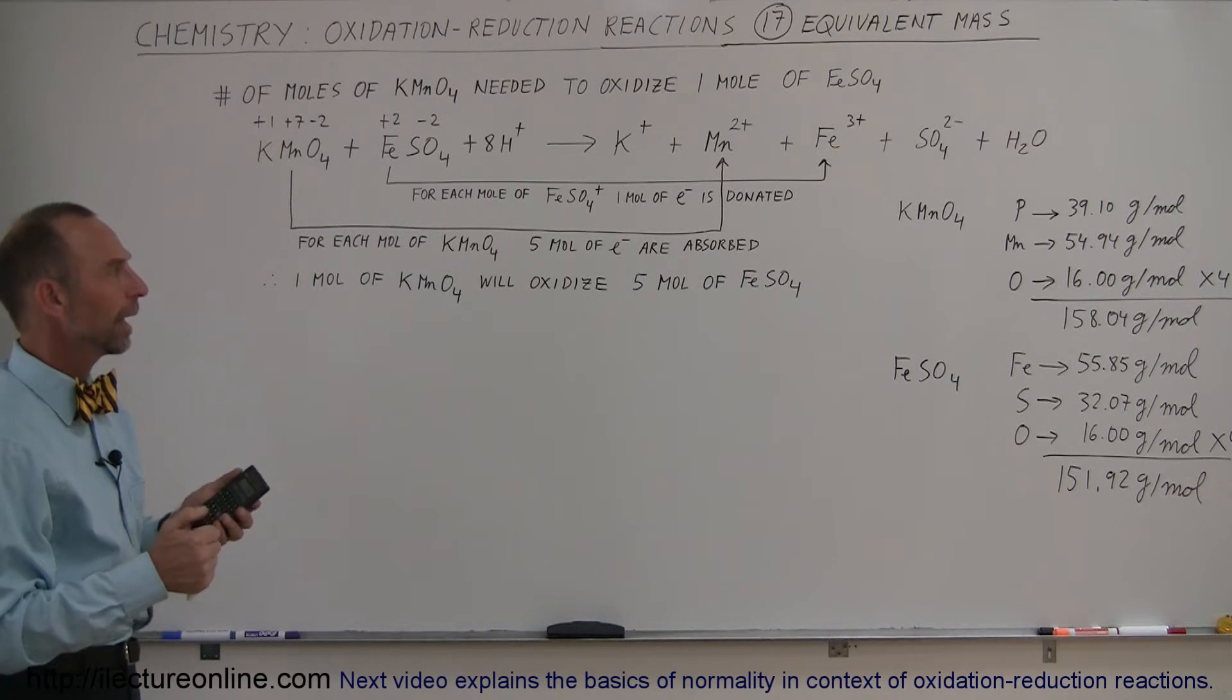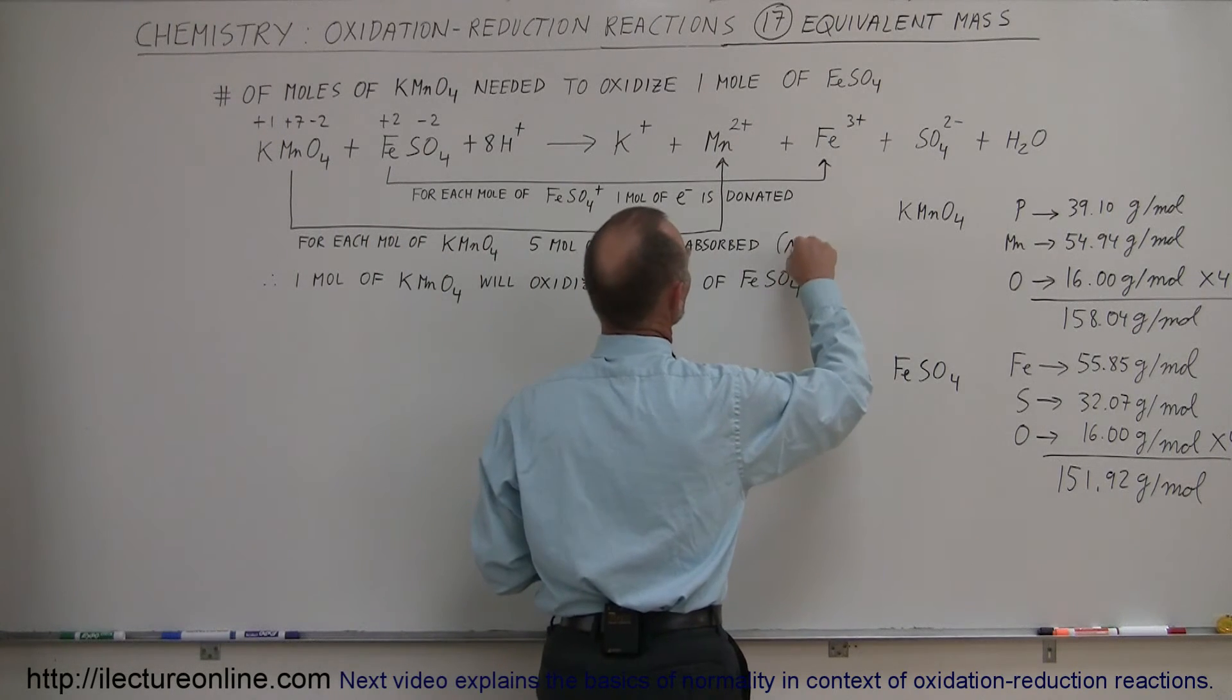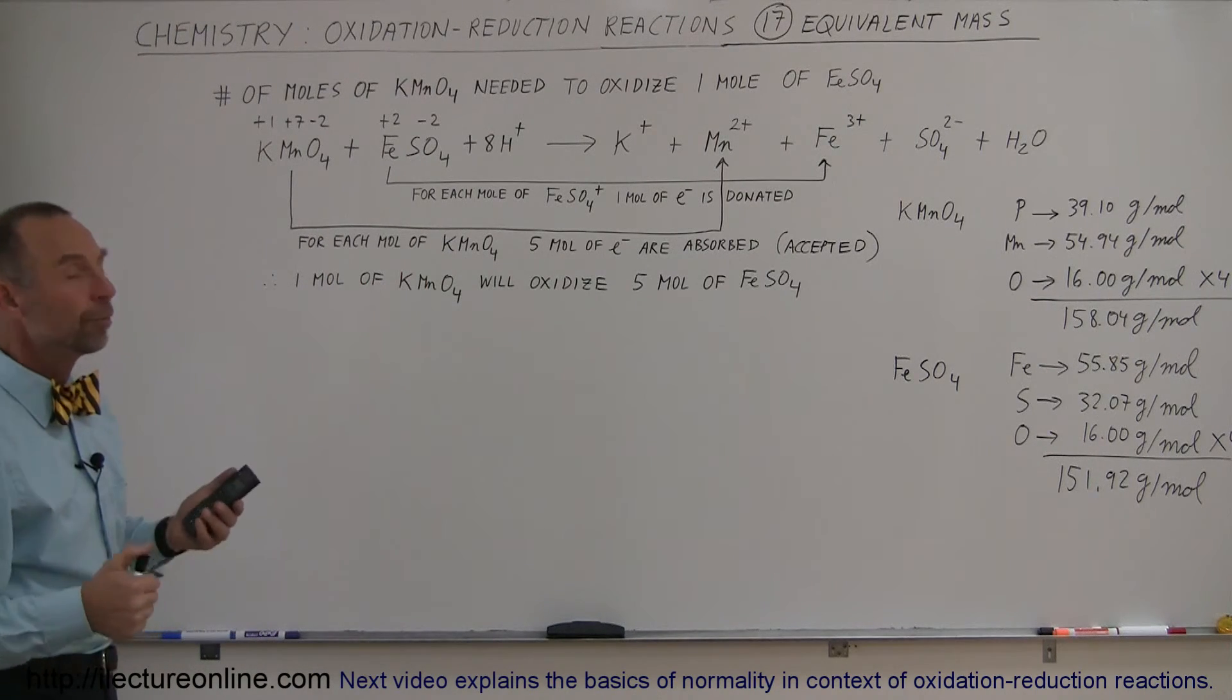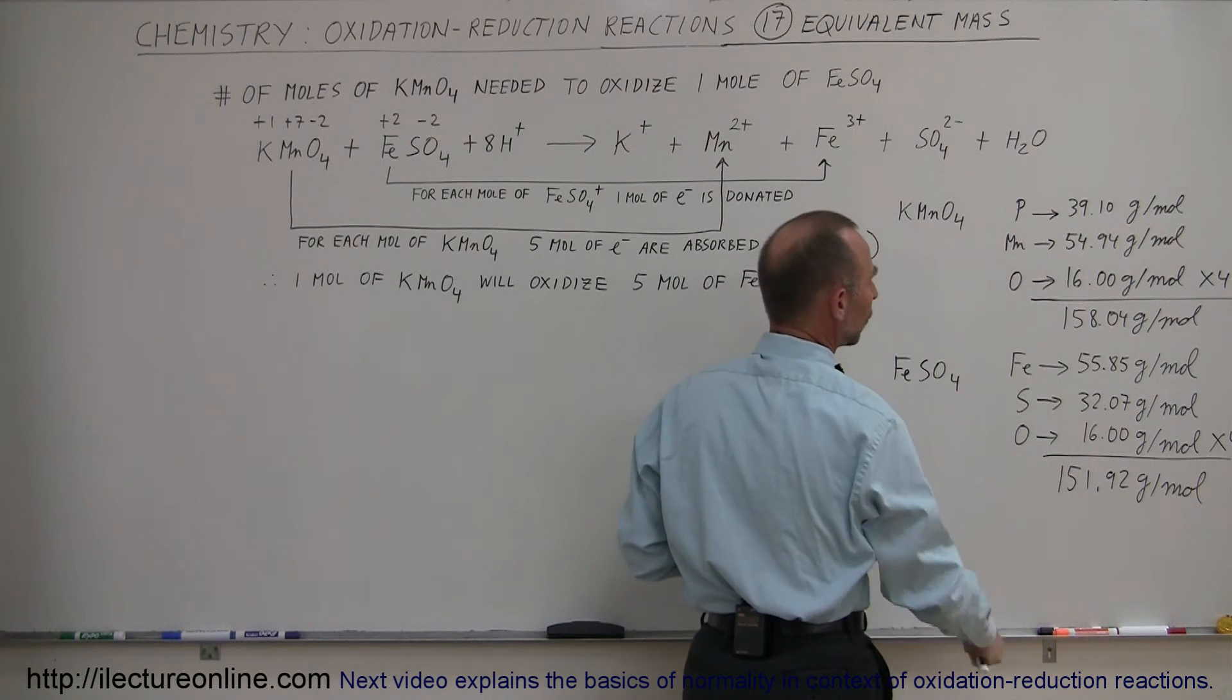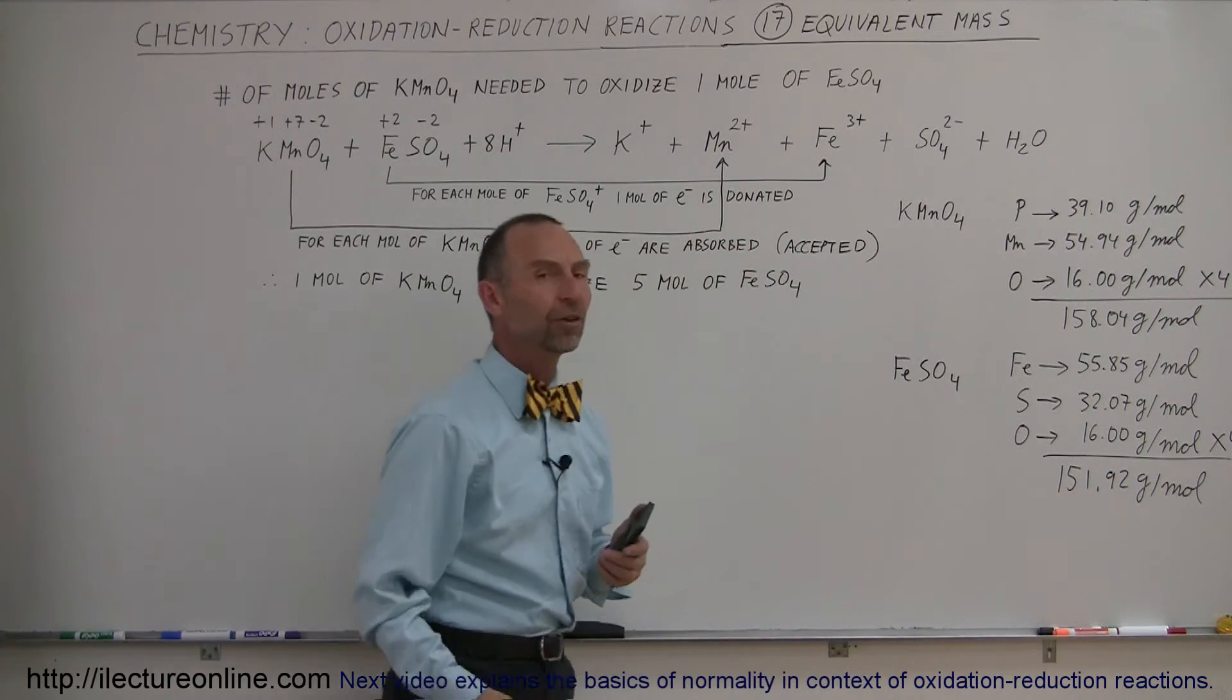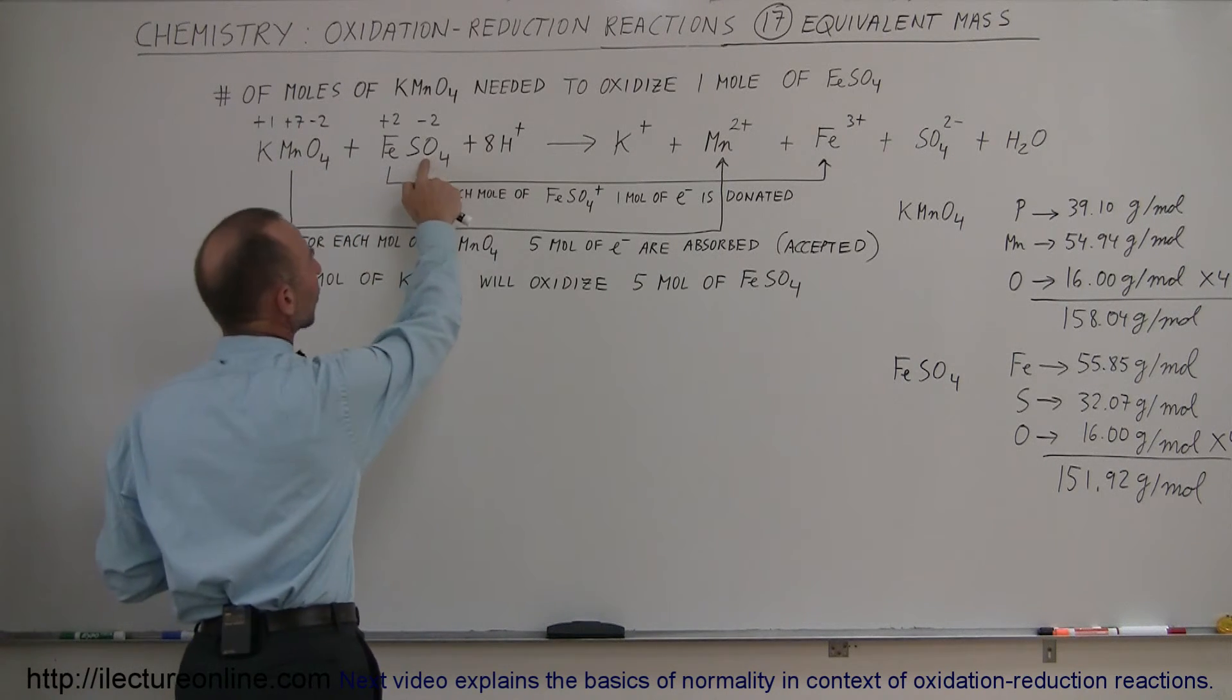If the same number of electrons per mole were absorbed as were donated or accepted, if there was a one-to-one correspondence, the molar mass equivalence would be that you would need 158.04 grams of potassium permanganate to oxidize 151.92 grams of iron sulfate. But it's not a one-to-one situation here because you can see that one mole of this will oxidize five moles of this.